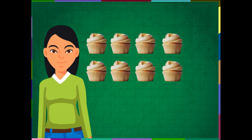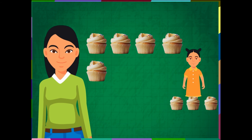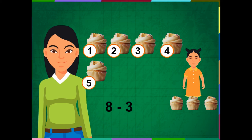Raghu's mother made 8 cupcakes for his friends. 3 were taken away by his sister, Rani. How many cupcakes are left now? Raghu's mother has 8 minus 3. So, how many are left? 1, 2, 3, 4 and 5. 8 minus 3 is equal to 5.